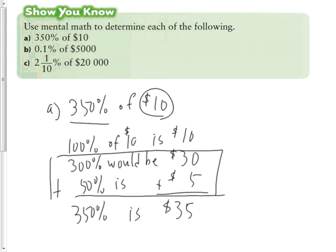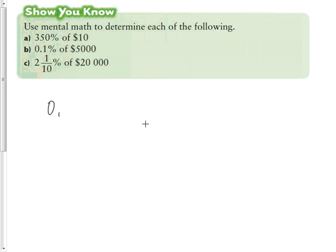Now the second one is what is 0.1% of $5,000? Again, we have to know our basics. We know the rule for 10% was to move the decimal place once.